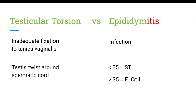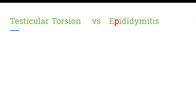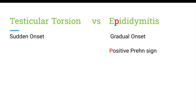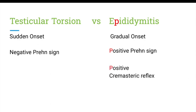Other ways to distinguish between testicular torsion and epididymitis are through clinical features. The onset in testicular torsion is sudden, while for epididymitis it is gradual. A positive Prehn's sign — a decrease in scrotal pain with elevation of the testicle — occurs in epididymitis but is negative in testicular torsion. A positive cremasteric reflex, elicited by stroking the inner thigh causing the cremaster muscle to contract and pull up the ipsilateral testicle, is also positive in epididymitis but negative in testicular torsion.